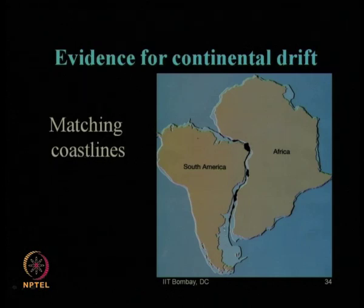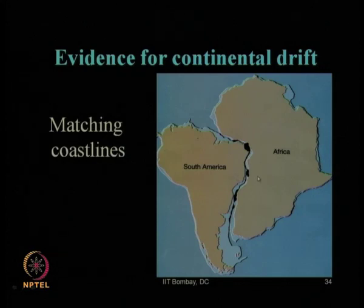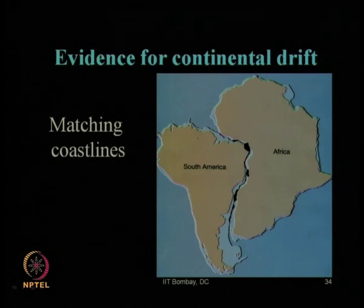If the coastlines of two continents match, it shows that at some point in time they must have remained together and with time, because of the spinning of the earth, they slowly drifted and got separated, taking today's shapes of these two continents.